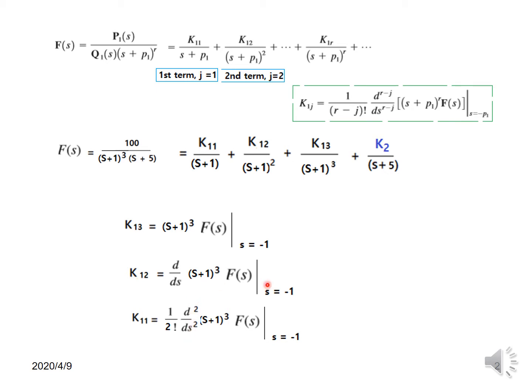For k11, we take the second derivative of the same expression. Additionally, a factorial factor comes into play: since r is 3 and j is 1, we have r−j = 2, so we multiply by 1 over 2 factorial. If there were more terms we would use 1 over 3 factorial, etc., but generally we restrict to this level of calculation.